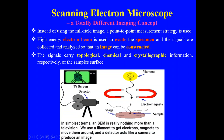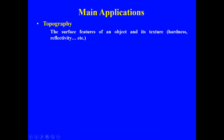In simple terms, an SEM is really nothing more than a television. We use a filament to generate electrons, magnets to move them around, and detectors that act like a camera to produce an image. The whole concept of the Scanning Electron Microscope is just like a TV screen with a camera, as you can see in the photograph shown here. The SEM has many applications.